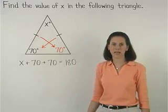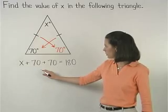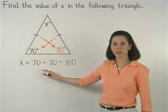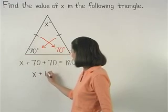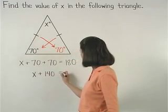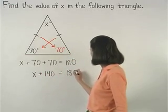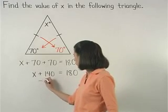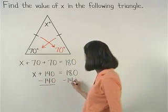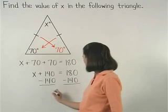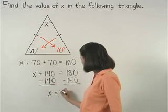Simplifying on the left side, 70 plus 70 is 140. So we have x plus 140 equals 180. And subtracting 140 from both sides, we find that x equals 40.